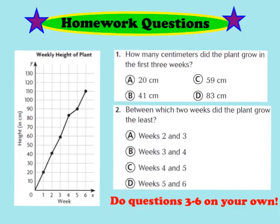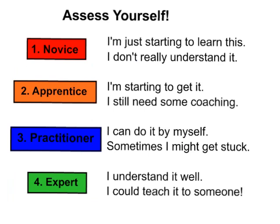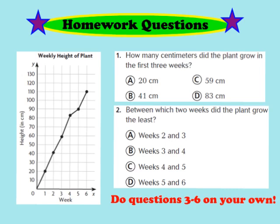Your homework for tonight is to complete questions 1 and 2, as well as numbers 3 through 6, found in your GoMath workbook on page 190. Somewhere on your homework page, assess yourself: are you a 1 novice, 2 apprentice, 3 practitioner, or 4 expert?